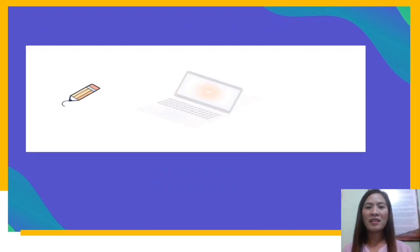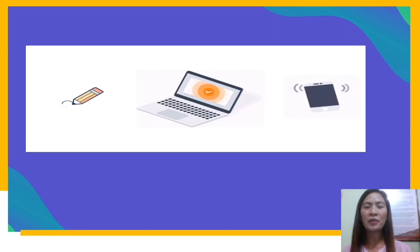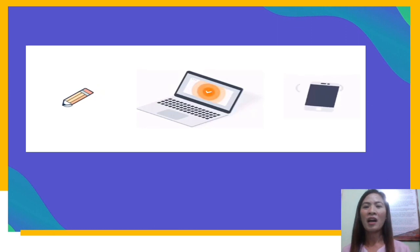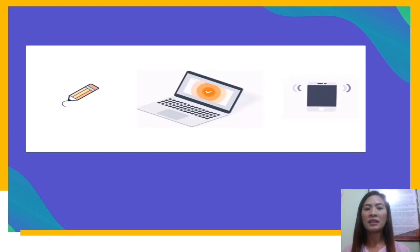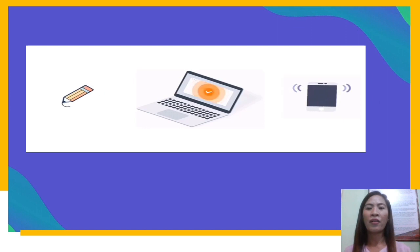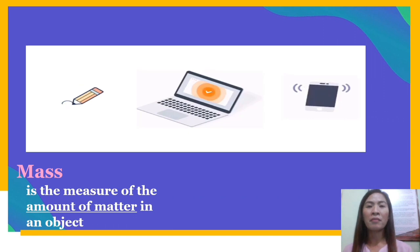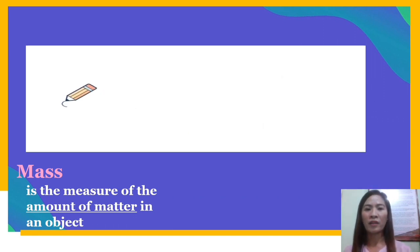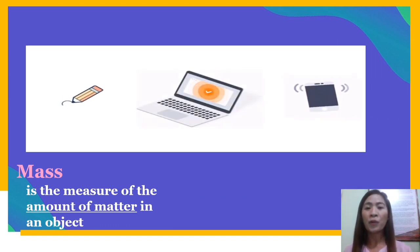If you compare the pencil, laptop, and a cell phone, surely you will say that the laptop is the heaviest while the pencil seems to be the lightest. The cell phone may not be as heavy as the laptop, but it is not as light as the pencil. What does this indicate? It means the objects around us may be light or heavy — these things have the so-called mass. Mass is the measure of the amount of matter in an object.